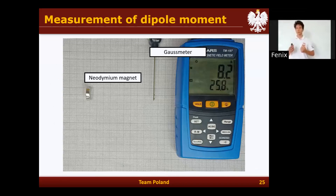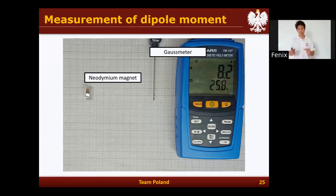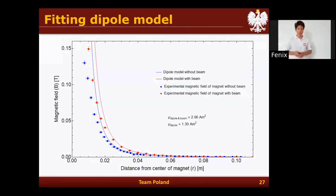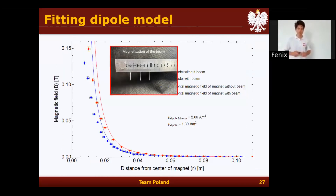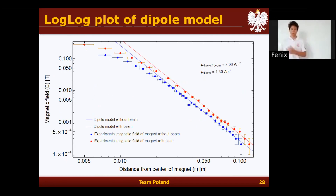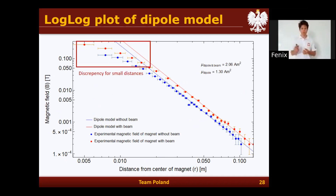When predicting frequencies in a coupled system, we first need to handle the magnetic interactions, which requires the magnetic dipole moment. We measured this by measuring the field at different distances using a Gaussmeter, with and without the oscillating beam attached. We found that with the beam attached, there is a much larger magnetic field due to magnetization inside the beam. We then fitted the magnetic dipole model to these field measurements to determine the magnetic dipole moment values, but found a large discrepancy at small distances from the magnet.